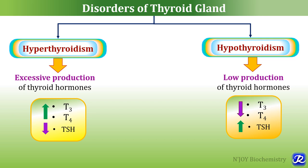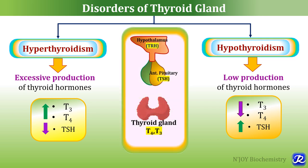The synthesis and secretion of thyroid hormones is regulated by the hypothalamo-pituitary-thyroid axis. The paraventricular nuclei of the hypothalamus releases thyrotropin-releasing hormone (TRH), which activates thyrotropes of the anterior pituitary to secrete TSH. TSH then activates the thyroid gland to synthesize and secrete T3 and T4. Whenever T3 and T4 levels are increased, by negative feedback they inhibit secretion of TSH from the anterior pituitary as well as TRH from the hypothalamus.